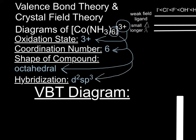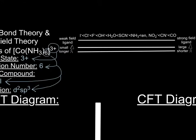This will be shown in more depth through the valence bond theory diagram. It is also important to take a look at the ligand of the coordination compound, which in this case is NH₃. Based on the chart, NH₃ is considered a strong field ligand. Because of this, it has a large splitting energy, as well as a shorter wavelength. This will be shown more in depth through the crystal field diagram.